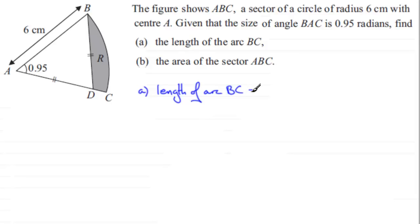Now this arc length here is a fraction of the circumference of the whole circle. And that fraction is going to be 0.95 compared with the angle for a full turn. Now we're working in radians here, so the number of radians in a full turn is 2π. And so we've got this fraction of the circumference of a full circle which is 2πr, and in this particular case the radius is 6.